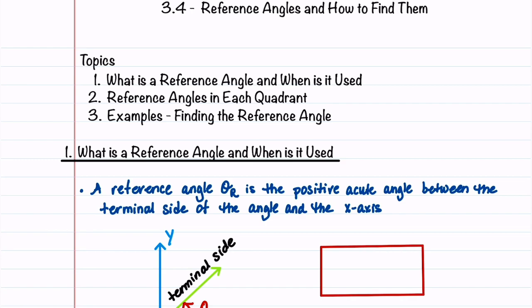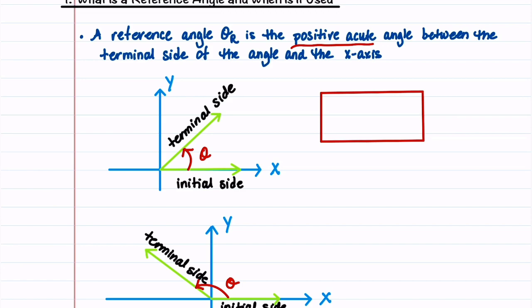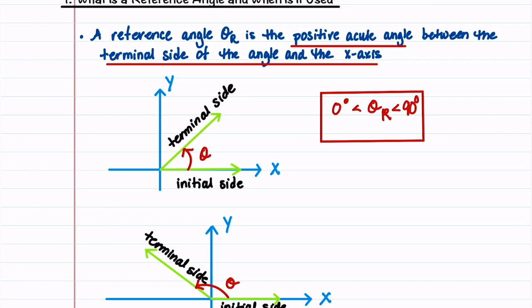Let's begin by talking about what a reference angle is and how it's used. A reference angle is the positive acute angle between the terminal side of the angle and the x-axis. Since our reference angle is a positive acute angle, it can be between 0 degrees and 90 degrees. So 0 degrees is less than our reference angle theta r, which is less than 90 degrees.